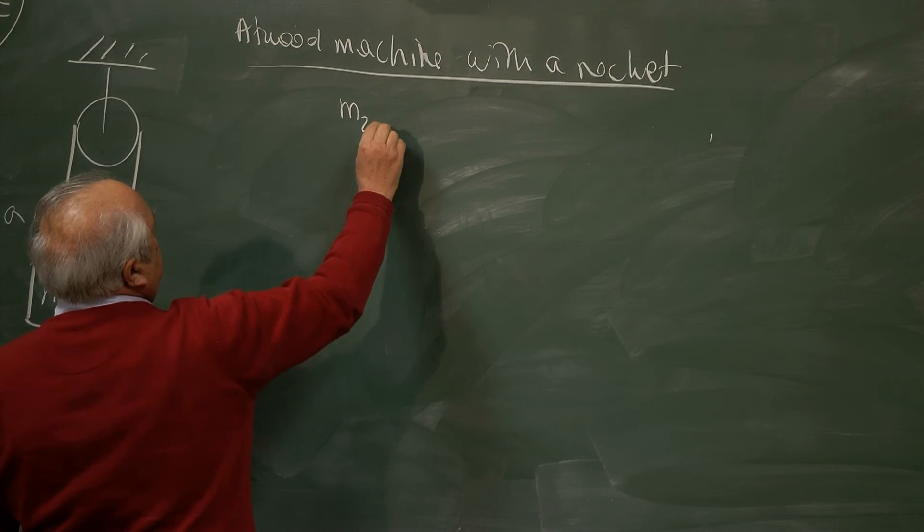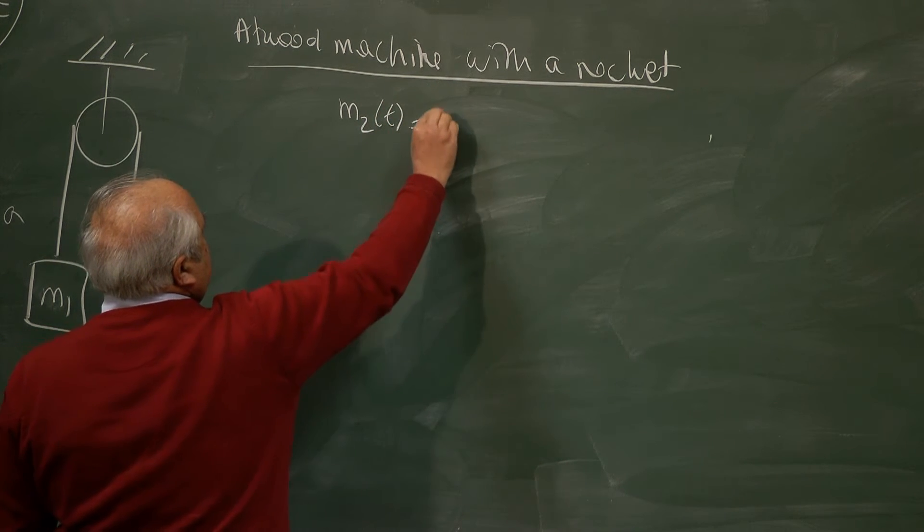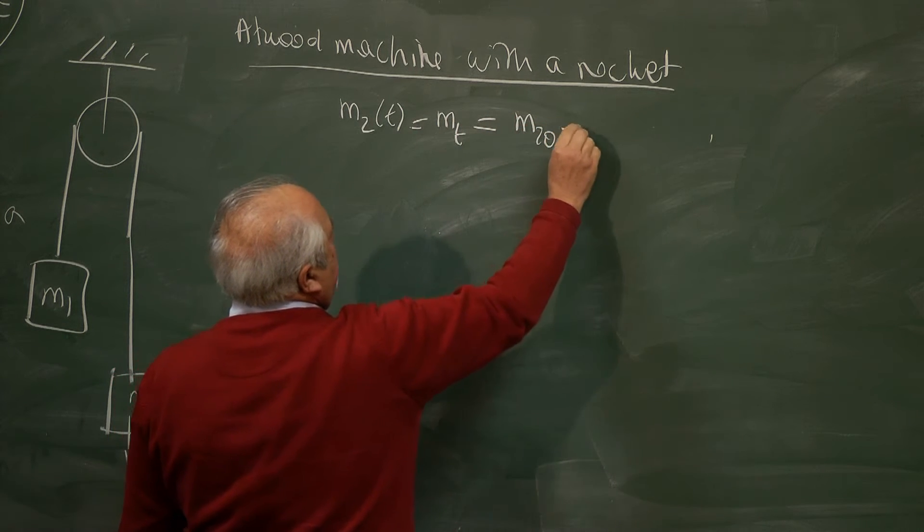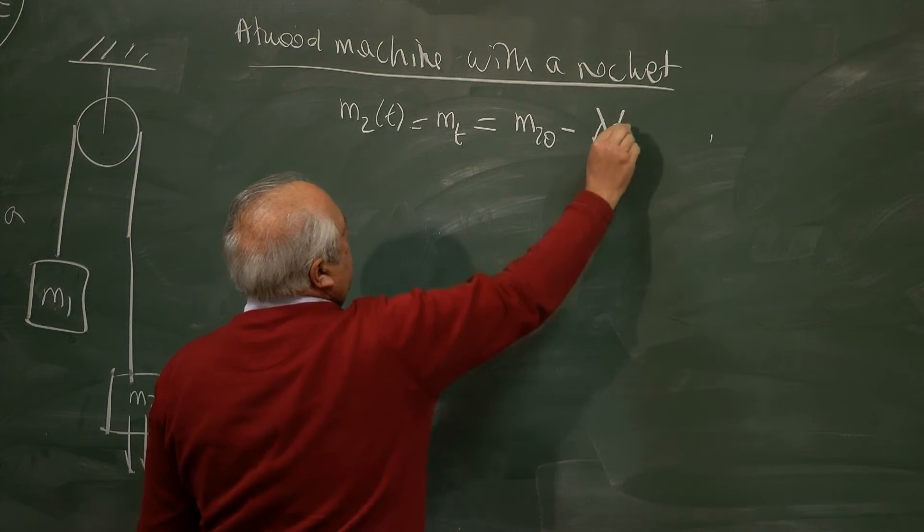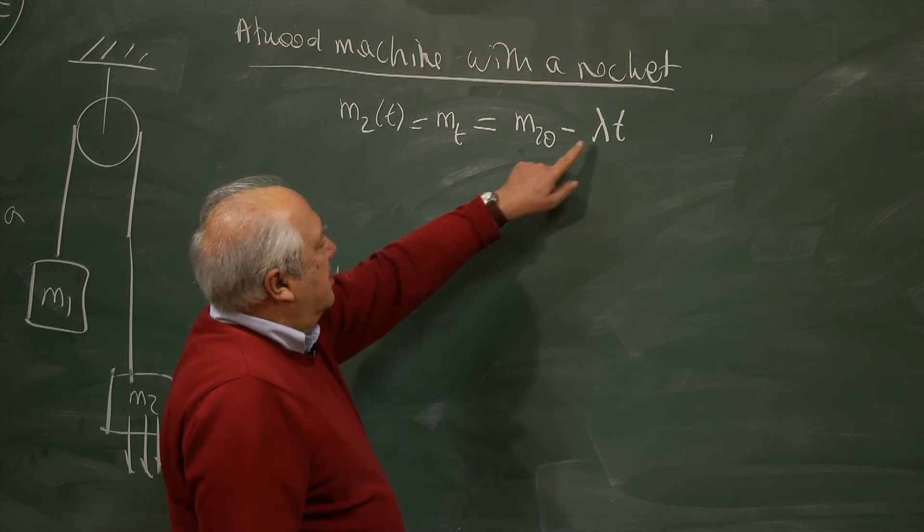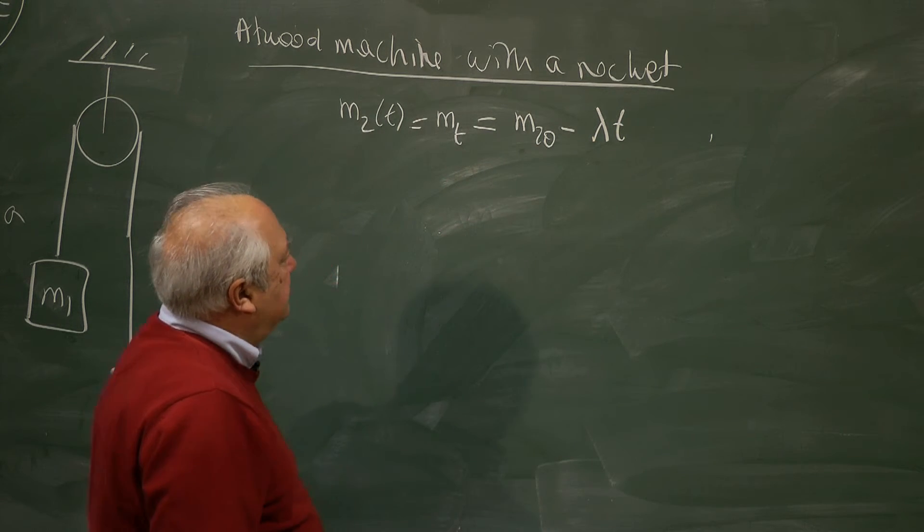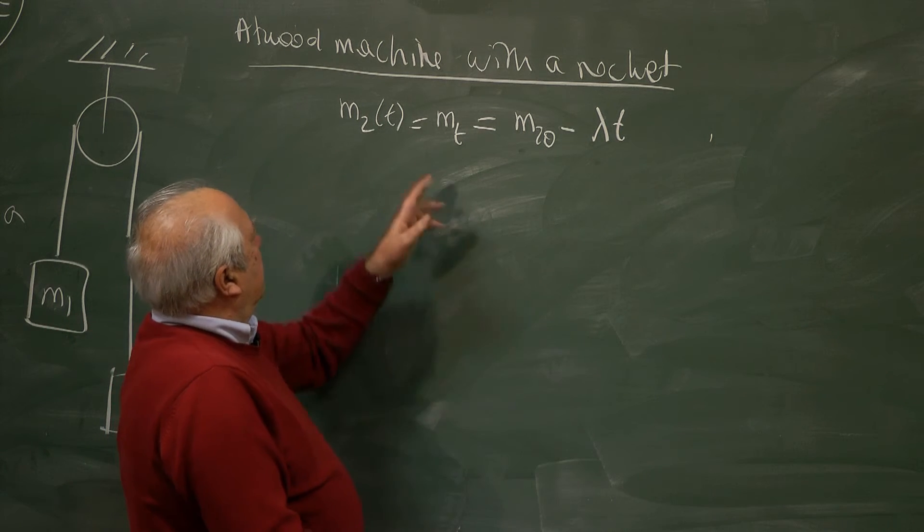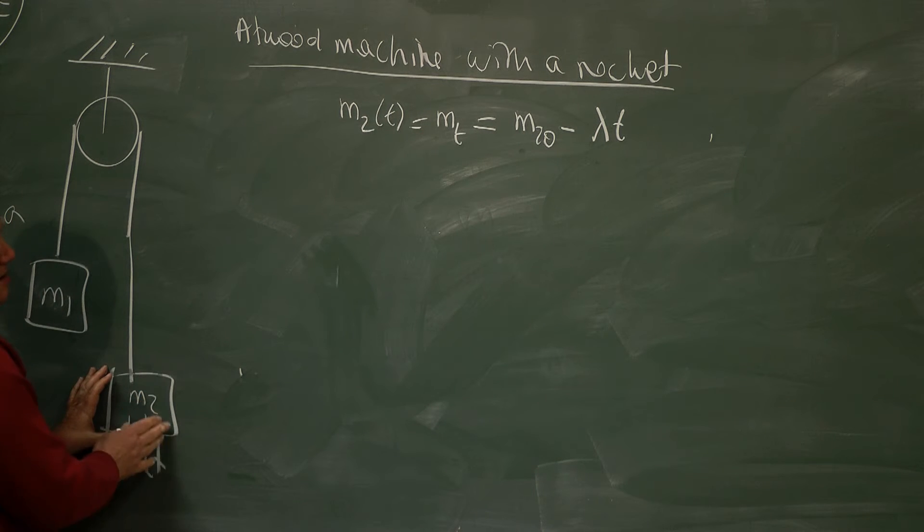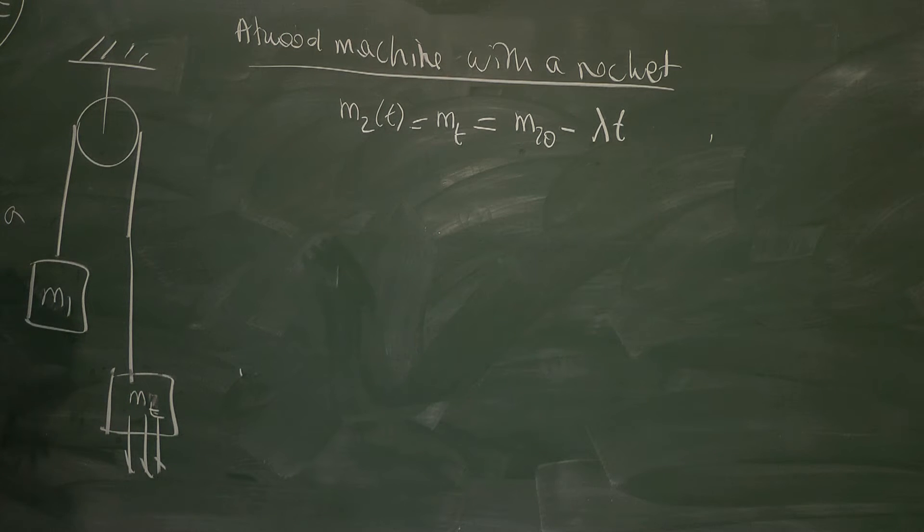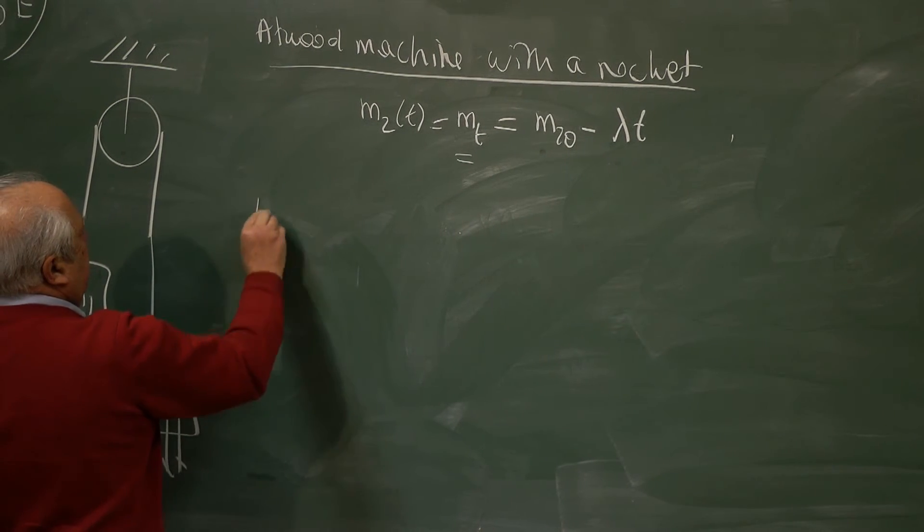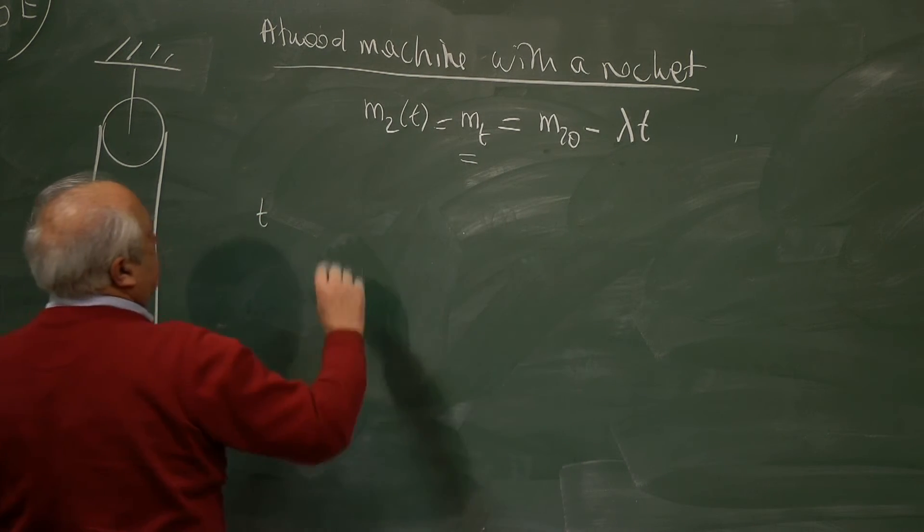So M2 is a function of T, sometimes for shorthand I will write M of T. This is M2 zero minus lambda T. This is mass. This is mass per unit time. So as time goes on, the mass of this thing is decreasing. So let me call this to be precise MT. So let's take a particular time T where the mass is MT.